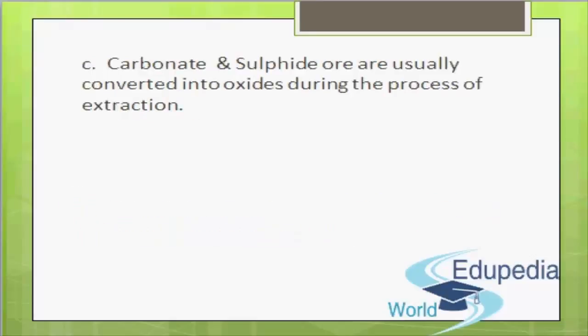The third part: carbonate and sulfide ores are usually converted into oxides during the process of extraction. It is always easier to extract a metal from its oxide ore compared to its carbonate and sulfide ore, because carbonate and sulfide ores do not undergo reduction easily, while metal oxides can be reduced to the corresponding metal easily by using suitable reducing agents such as carbon or carbon monoxide.